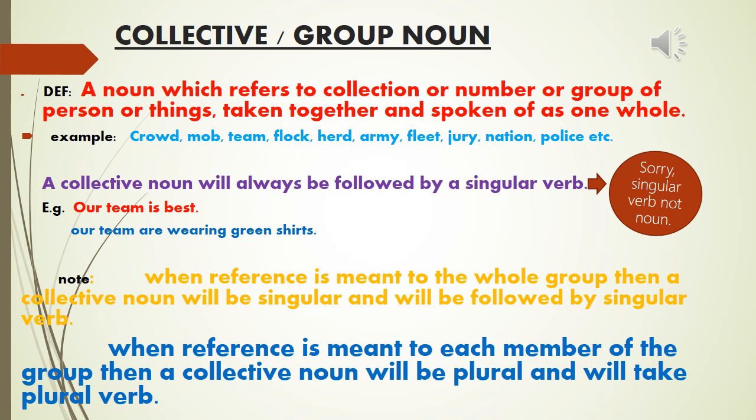Examples of collective nouns include: crowd, mob, team — a combination of 11 players; flock; herd — different cattle combined together; army — a combination of soldiers; fleet — a combination of vessels or ships; jewelry, nation, people, and police.